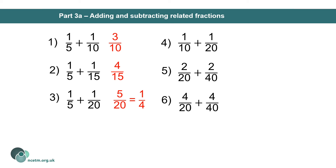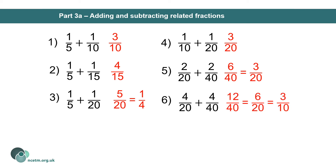For question three, applying the same pattern, the numerator increases by one and the denominator increases by five again, giving five twentieths — which is also equivalent to one quarter. So we're exploring the fact that answers can be simplified into different forms. For question four, the denominator for the first fraction changes from five to ten, giving three out of 20. For question five, doubling both numerators and denominators for both fractions still gives three out of 20 — a nice discussion point showing students that questions four and five are adding equivalent fractions, and that one tenth equals two twentieths.